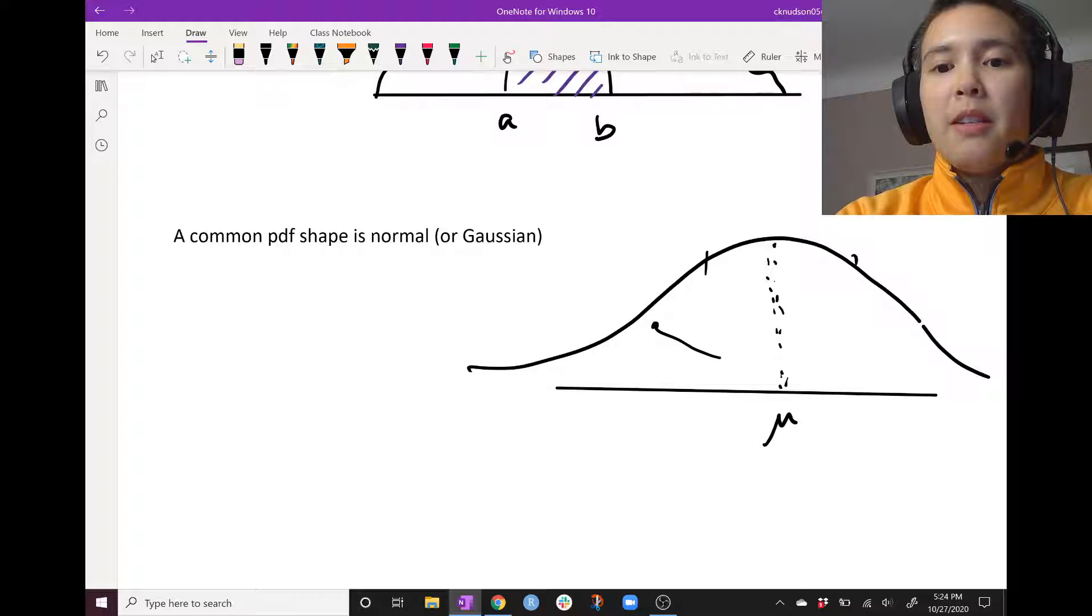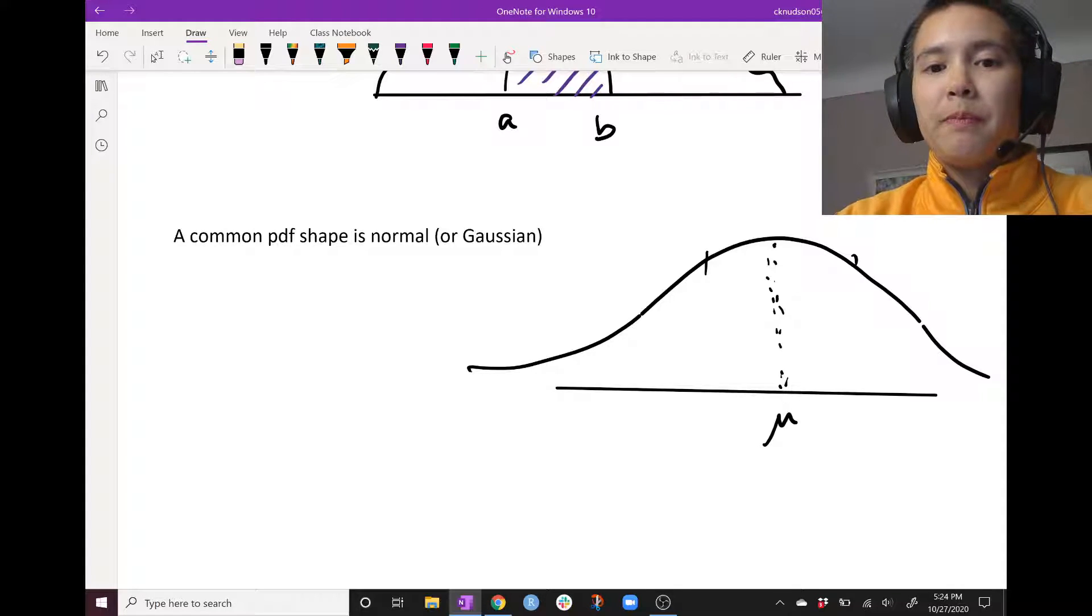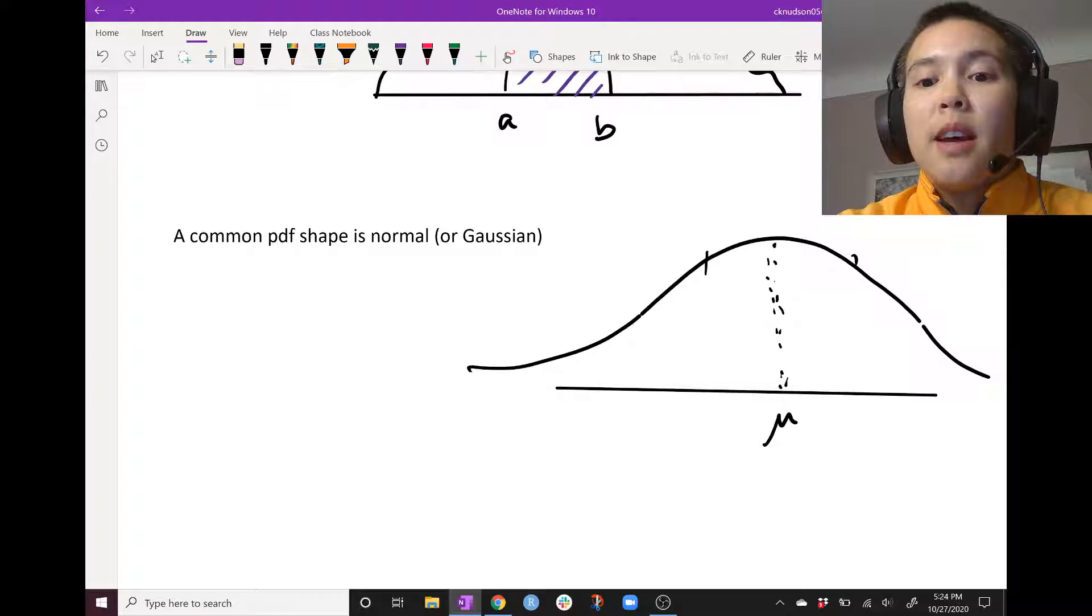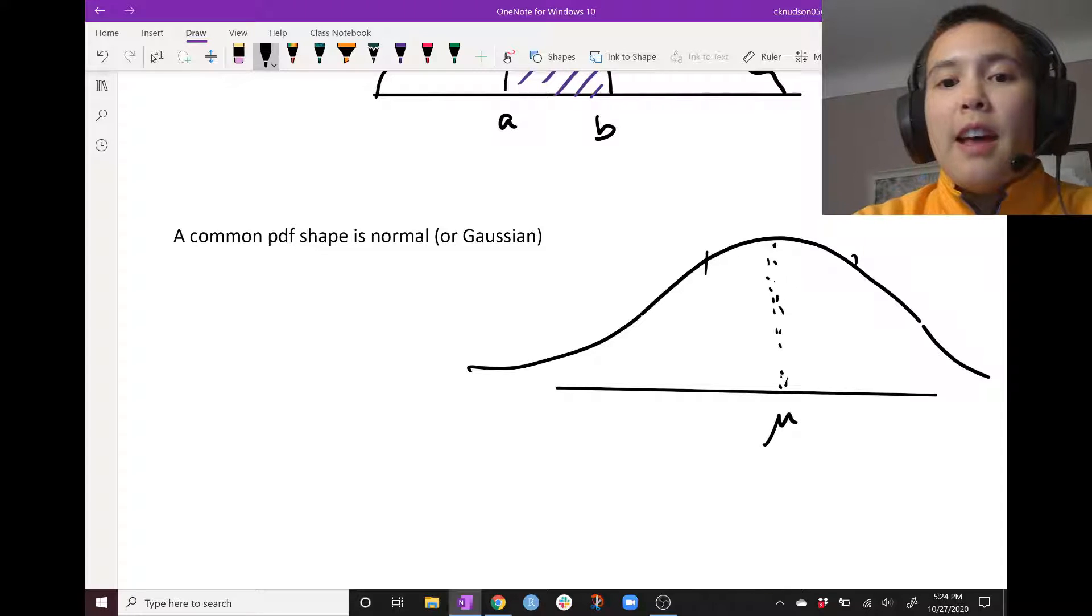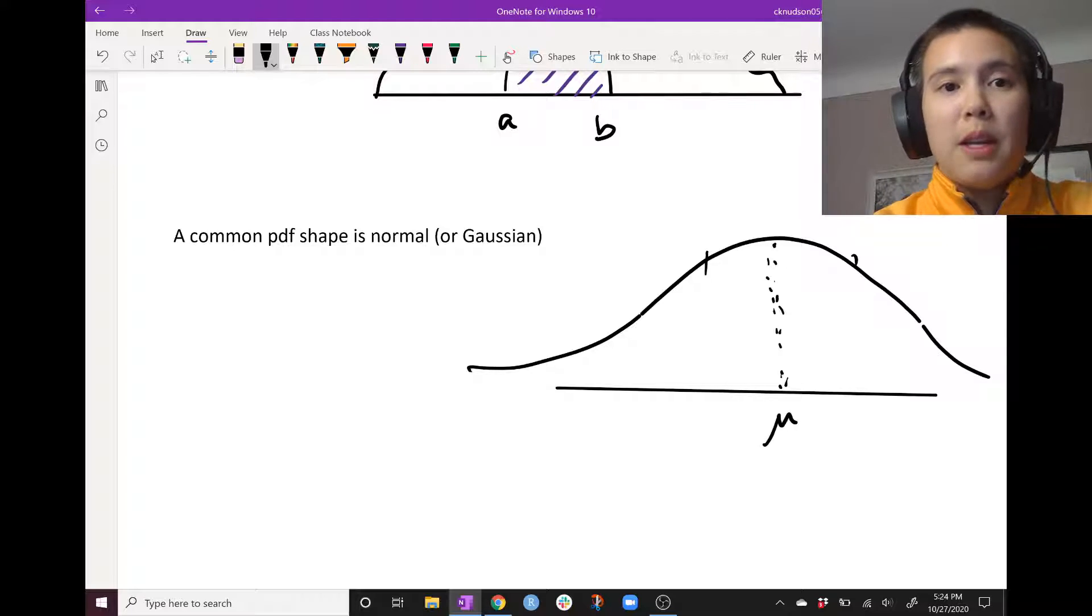So if we put a mirror down the middle, it would reflect and look exactly the same right to the left. So it has center mu. And then we can calculate probabilities from this normal distribution, just like we did with other continuous distributions by looking at the PDF.